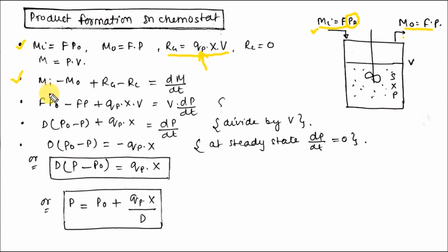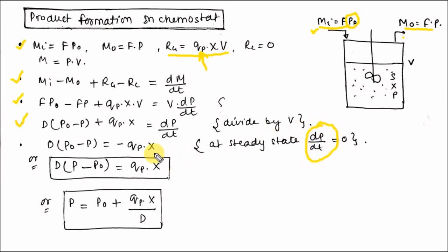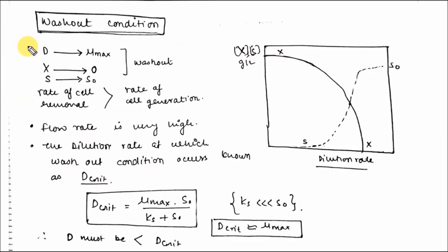Using the material balance equation: F·P_naught minus F·P plus Q_P·X·V equals V·(dP/dt). Since V is constant, dividing the whole equation by V gives the dilution-rate form. At steady state, dP/dt equals zero, yielding: D·(P minus P_naught) equals Q_P times X, or P equals P_naught plus Q_P times X. This equation represents the product concentration in the chemostat.